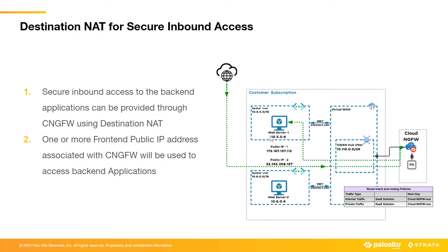For example, if you want to access a web server with IP address 10.5.0.9, which is part of the spoke VNet, you need to access it using a public IP address from the internet. We will perform destination NAT on Cloud NGFW where the destination IP address will be changed from the public IP address to the actual private IP address of the web server. On receiving the traffic at Cloud NGFW using the front-end IP address, destination NAT is performed and traffic is redirected towards the backend application after inspection.